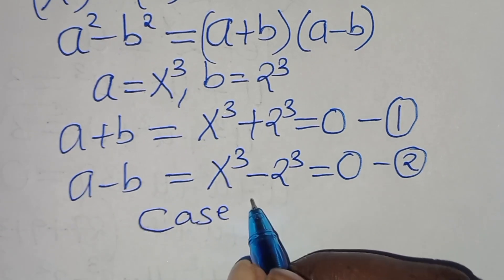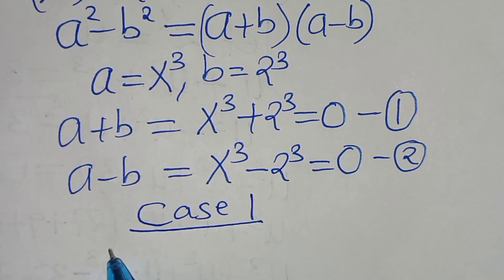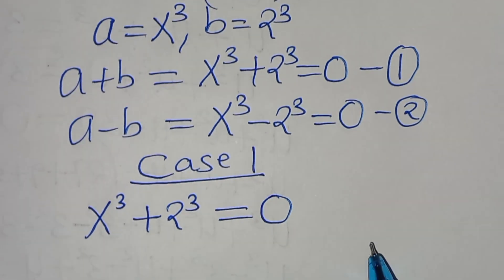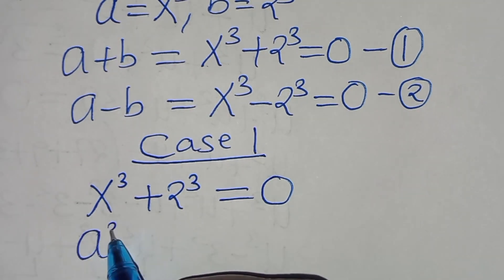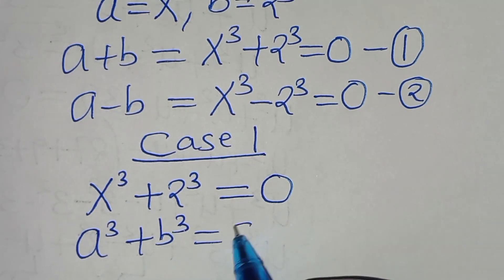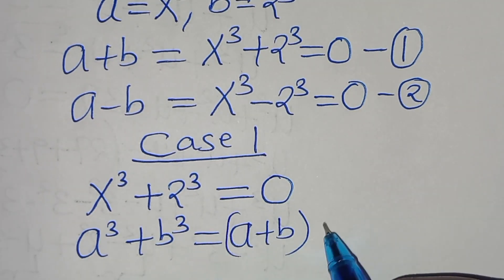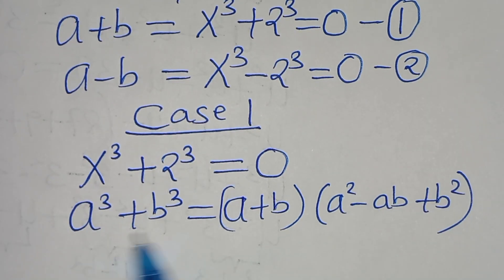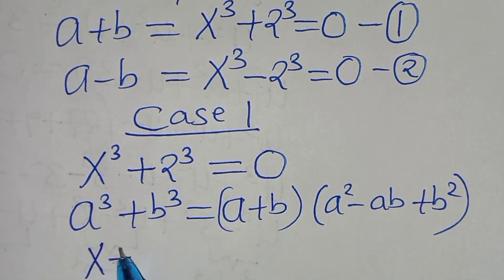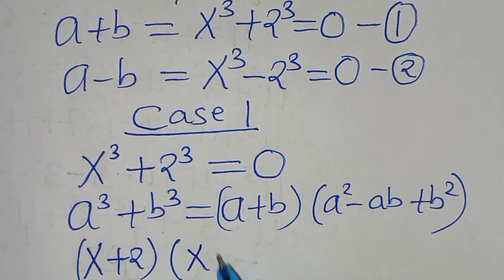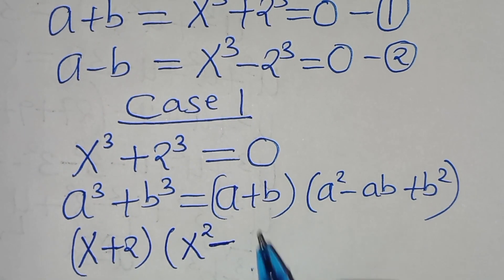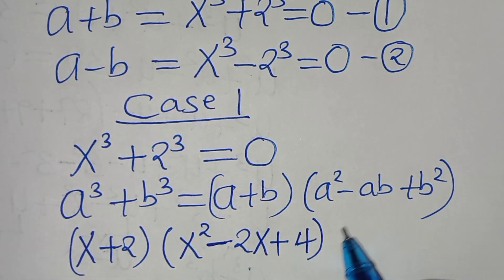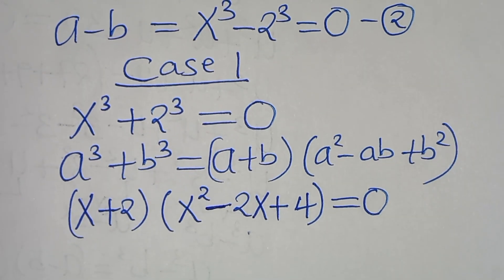In case 1, we have x to the power of 3 plus 2 to the power of 3 equals 0. This equation is in the form of a to the power of 3 plus b to the power of 3, which we can express as a plus b times a squared minus ab plus b squared. Applying this identity, we have x plus 2 times x squared minus 2x plus 4 equals 0.